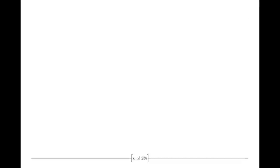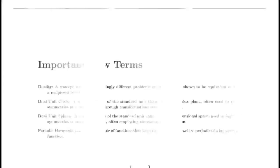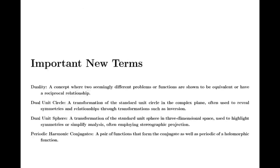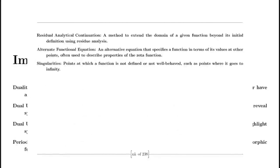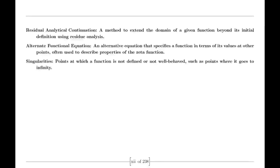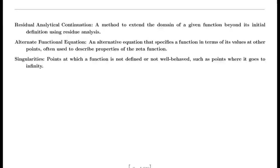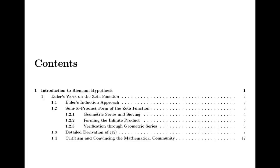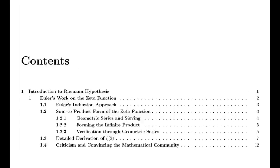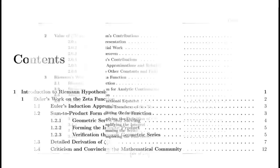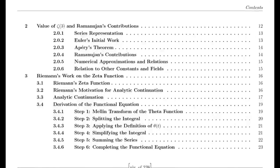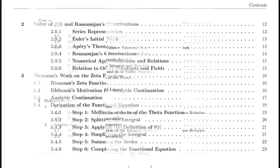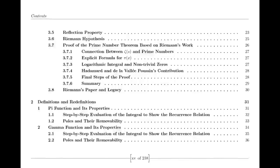As the years rolled on, mathematicians like David Hilbert and Henri Poincaré took up the zeta function, weaving it into the fabric of their own theories. Hilbert recognized its elegance, while Poincaré explored its implications in topology and analysis. In the 20th century, mathematicians like Hadamard and de la Vallée-Poussin demonstrated the profound connection between the zeta function and the distribution of prime numbers, showcasing how the simple series could hold the key to one of mathematics's deepest mysteries.